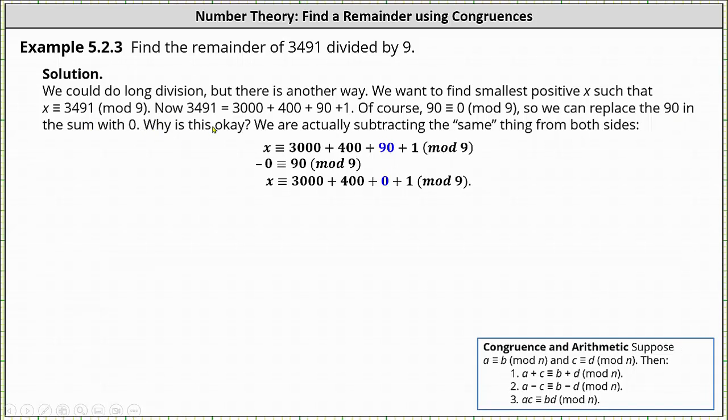But you might be asking, why is this okay? We're actually subtracting the same thing from both sides - 0 from the left and 90 from the right, which is allowed because 0 ≡ 90 (mod 9). Simplifying, we now have x ≡ 3000 + 400 + 0 + 1 (mod 9).